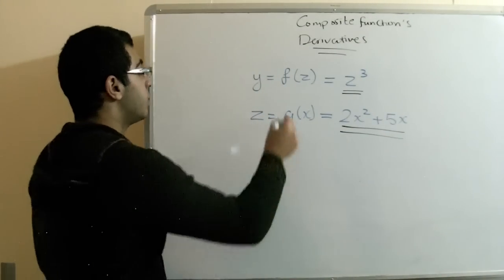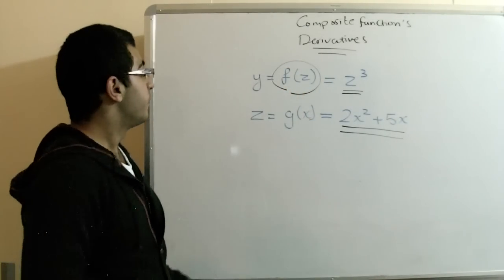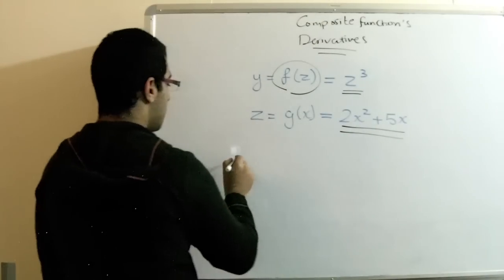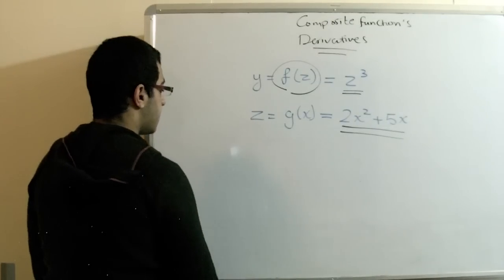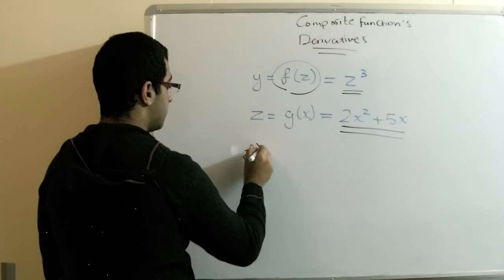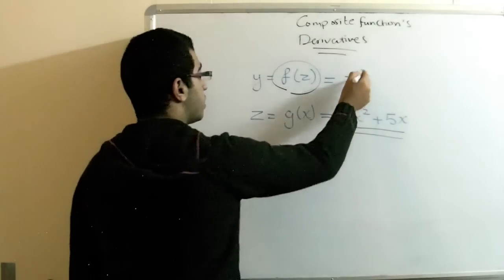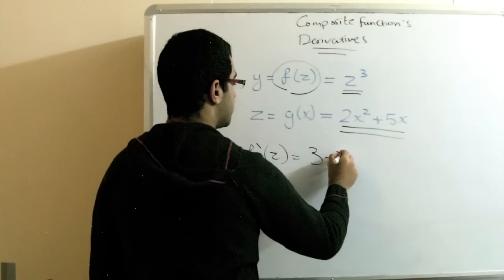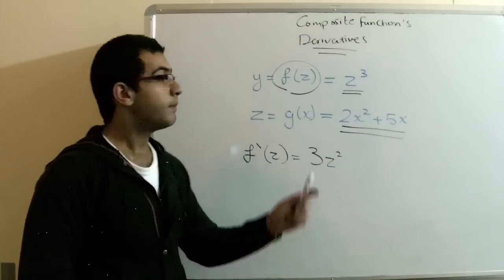We begin with the general one, the one which contains the two functions together, the f of z. We get the derivative of this function. So we have f'(z) equals—we drop the three downwards, subtract one from the 3 to get 3z to the power 2. This is the derivative of our f(z).